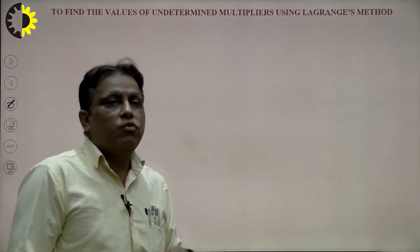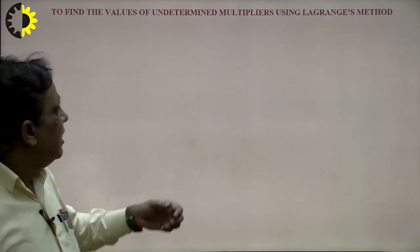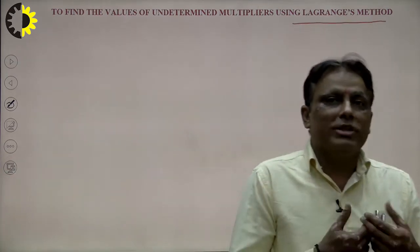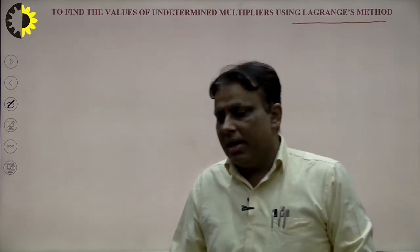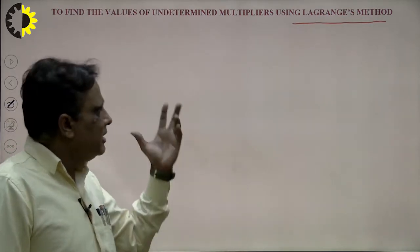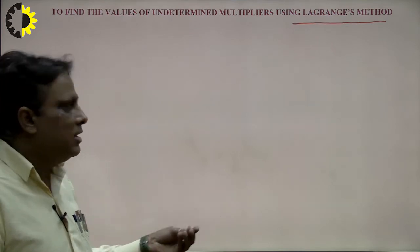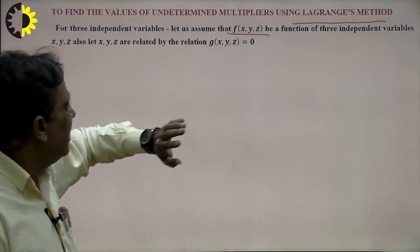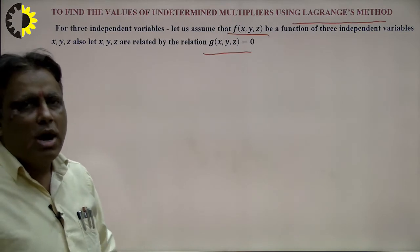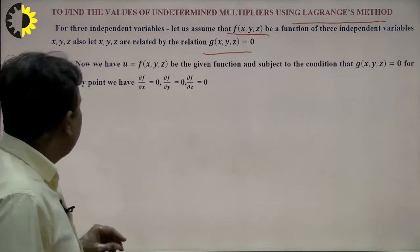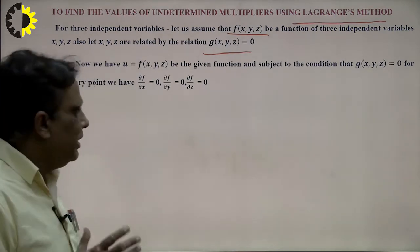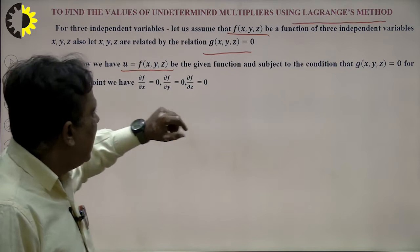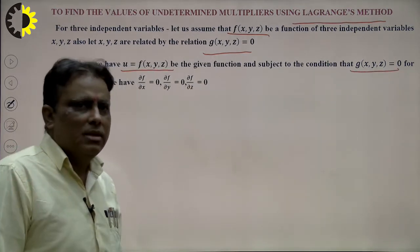Now, another method is to find the extreme value using the Lagrange multiplier method. This is a very important method applicable when variables are two or more. It can be applied for 2, 3, 4 variables. In this method, there is a function and a given condition (constraint). We characterize the problem into two parts: the function and the constraint.